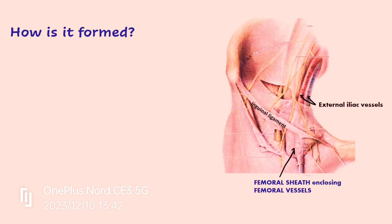The femoral sheath is present exactly below the inguinal ligament, enclosing the femoral artery, femoral vein, and the femoral canal. Here we can see the external iliac vessels — you start calling them femoral vessels as soon as they cross the inguinal ligament. When these vessels pass behind the inguinal ligament, they are enclosed in a fascial sheath, and the anterior aspect of this sheath is formed by fascia transversalis.